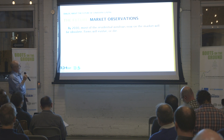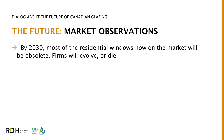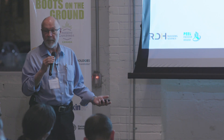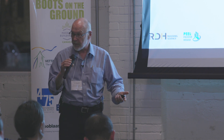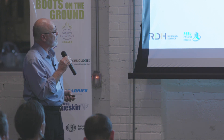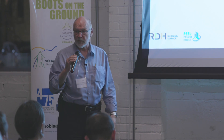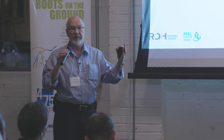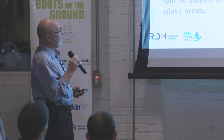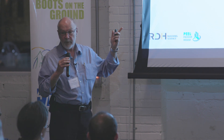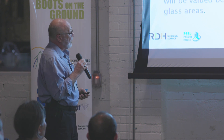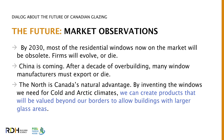Some market observations for manufacturers: by 2030, most residential windows now on the market will be obsolete. You might be able to use them in replacements, but codes may not allow that — there might be a requirement for replacement windows to be upgraded to the 0.8 level. Also, China is coming. After a decade of overbuilding, many window manufacturers must export or die, and Passive House is going gangbusters in China. They're building entire cities of Passive House buildings, creating huge competition from imported products like never before.